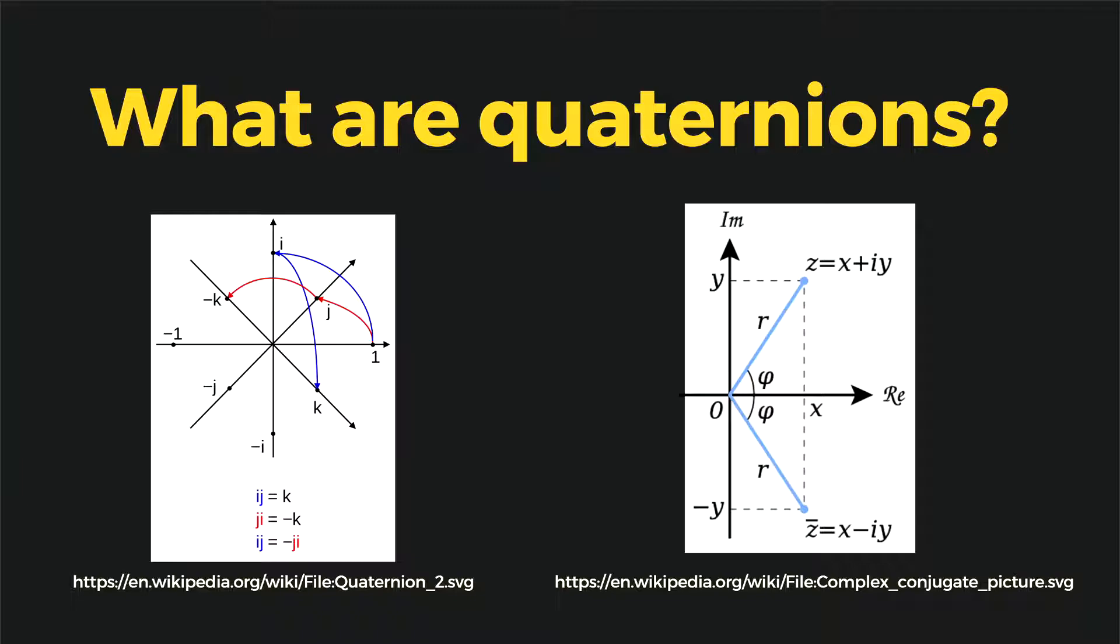Quaternions work by calculating the rotation in 4D imaginary space. Imaginary meaning it uses the imaginary number square root of i equals minus one. Now, some of you might have had complex numbers at university.